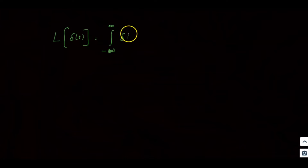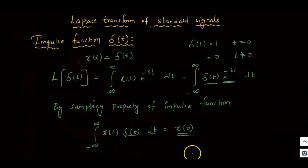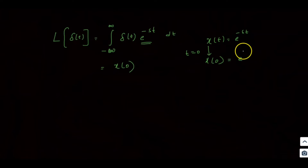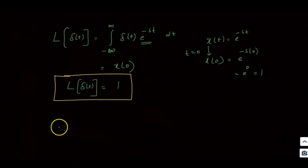So the Laplace transform of δ(t) equals the integral from minus infinity to infinity of δ(t) times e^(−st) dt. By the sampling property, this equals x(0), where x(t) = e^(−st), so x(0) = e^(−s×0) = e^0 = 1. Therefore, the Laplace transform of δ(t) is equal to 1.